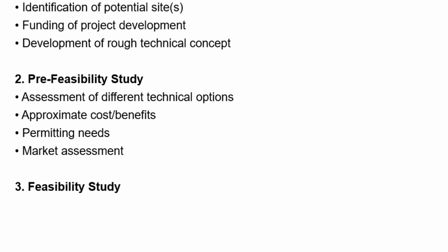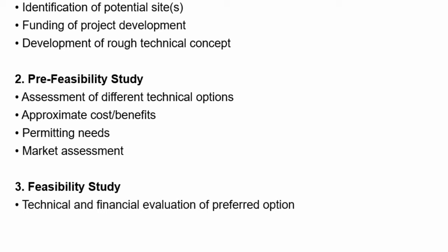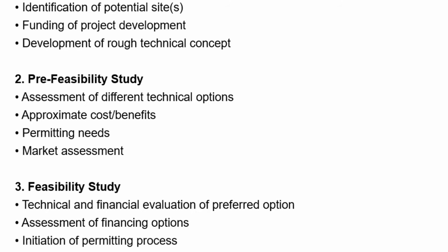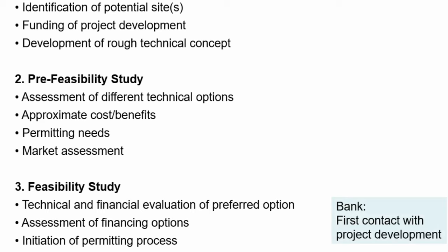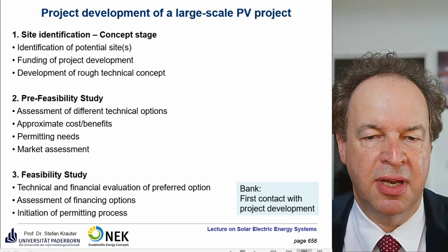Then you start really with the feasibility study — a technical and financial evaluation of the preferred option. Instead of calculating all options, you select the one that looks most promising. You have different options for financing, whether it's a loan or a mixed structure — you keep a part of the power plant or just sell the electricity. And you already start the permitting process, because this can take an enormous amount of time. Then you get in contact with the bank to tell them the outline of your project, the risks, and so on — or usually they do the risk analysis on their own.